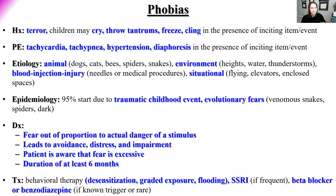About 95% of phobias start in relation to a traumatic childhood event, such as a dog bite. There is also an evolutionarily protective component — fear of venomous snakes, spiders, or the dark stems from rational evolutionary fears that are then taken to an extreme. When exposed to the phobia stimulus, the patient experiences sheer terror: their heart races, breathing quickens, blood pressure spikes, and they may sweat.